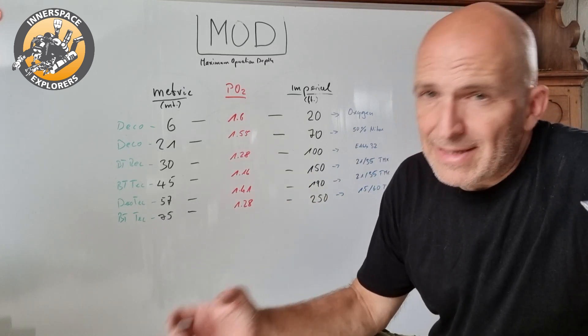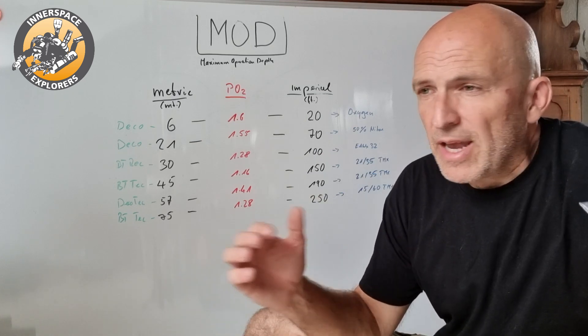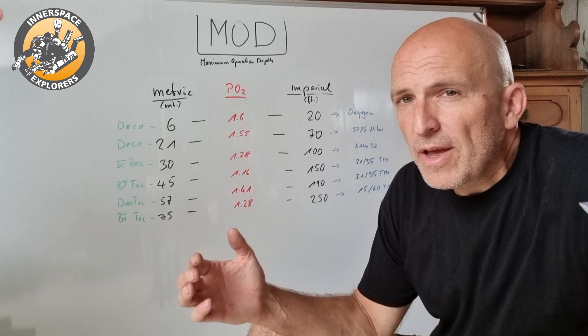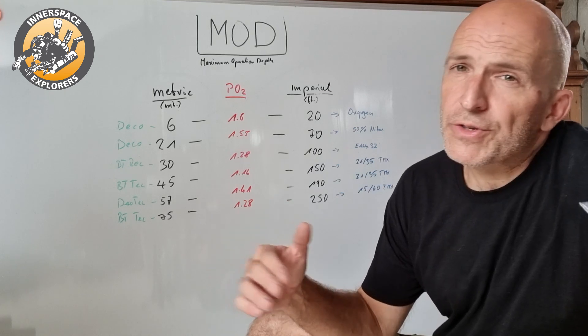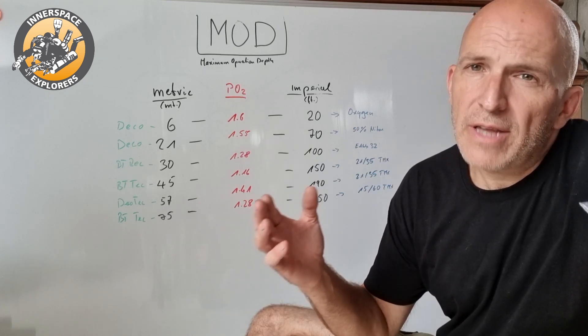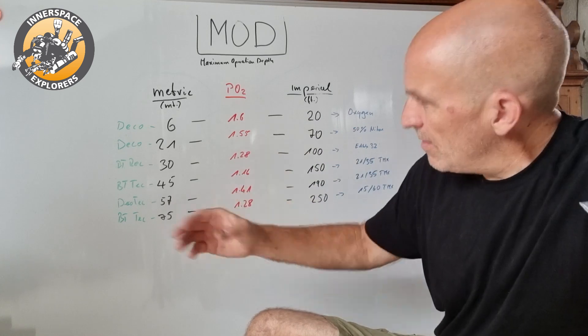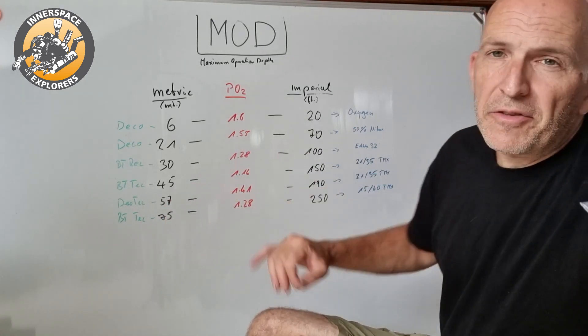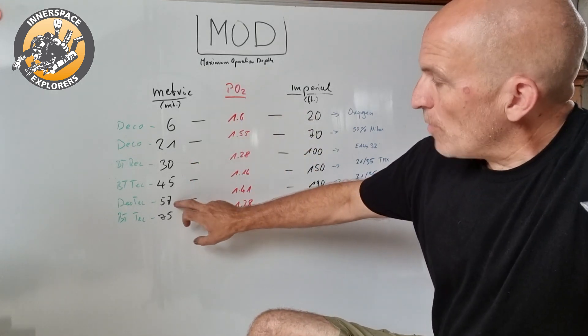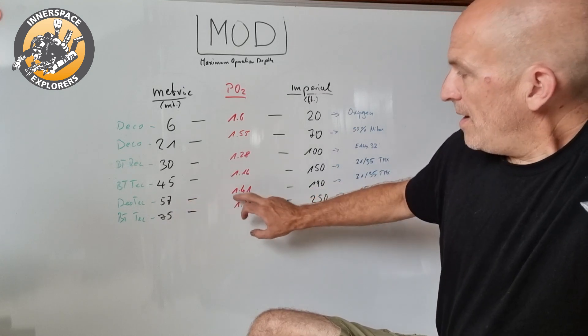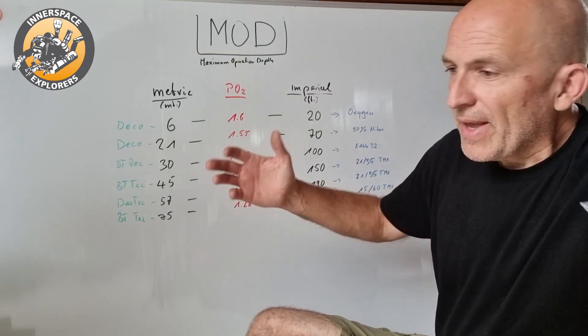If I use the same gas as a decompression gas, let's say I do a deep dive using for example 10/80 as a bottom gas, and I'm coming up, my first decompression gas would be 21/35. First of all, this allows me to switch deep to a decompression gas, which also makes my bailout strategy a little bit easier because I do not have to carry that much deep bailout gas. It only has to take me to let's say 57 meters, i.e., 190 feet, instead of bringing me up to let's say 30-something meters.